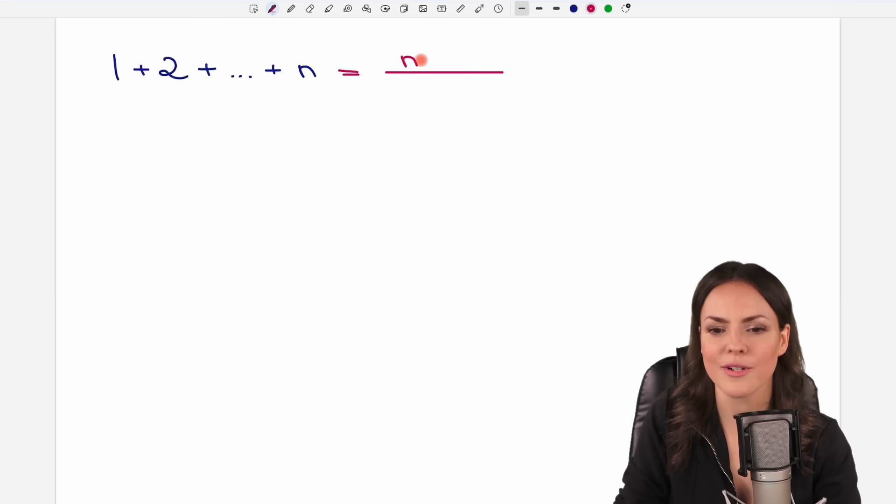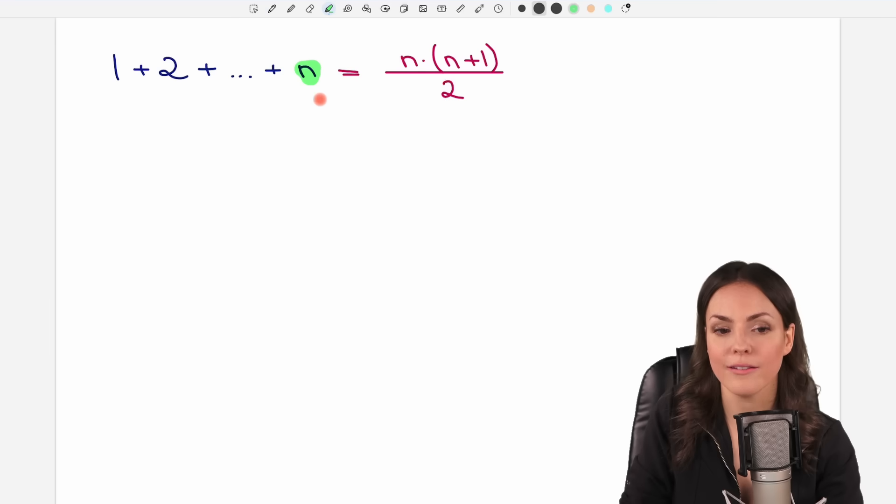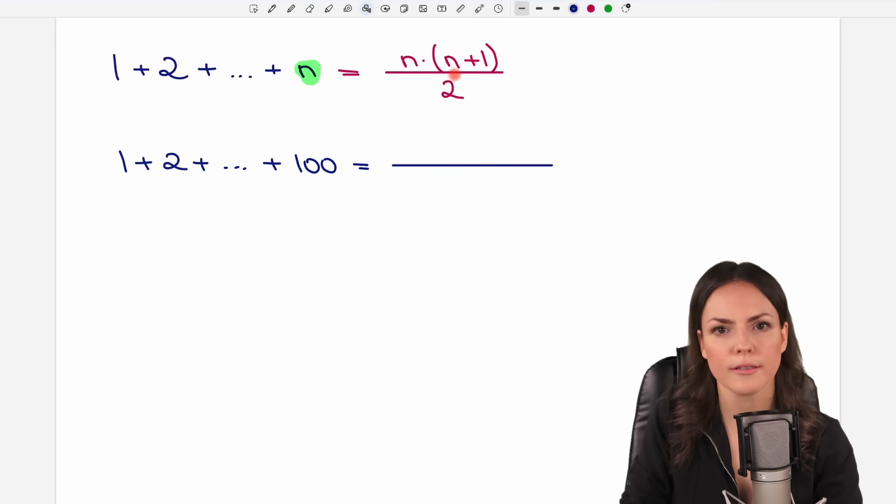And it says that the result is N times (N plus 1) over 2. So let's just check if for the sum that we just had, so for the sum of the first 100 positive integers, if this formula works. It should. Spoiler alert!